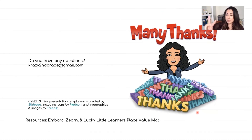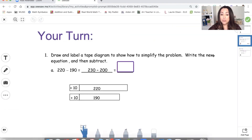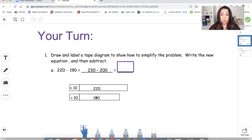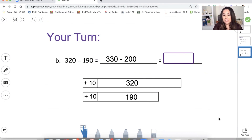Let me walk you through two problems in our problem set. First problem: draw and label the tape diagram to show how to simplify the problem, write the new equation, then subtract. We have 220 take away 190. You can see the tape diagram with 220 and 190. We added 10 to each to make an easier equation. What is that answer? Second problem: 320 take away 190. Here's the tape diagram on the bottom, and you have your simplified equation — I want your answer.